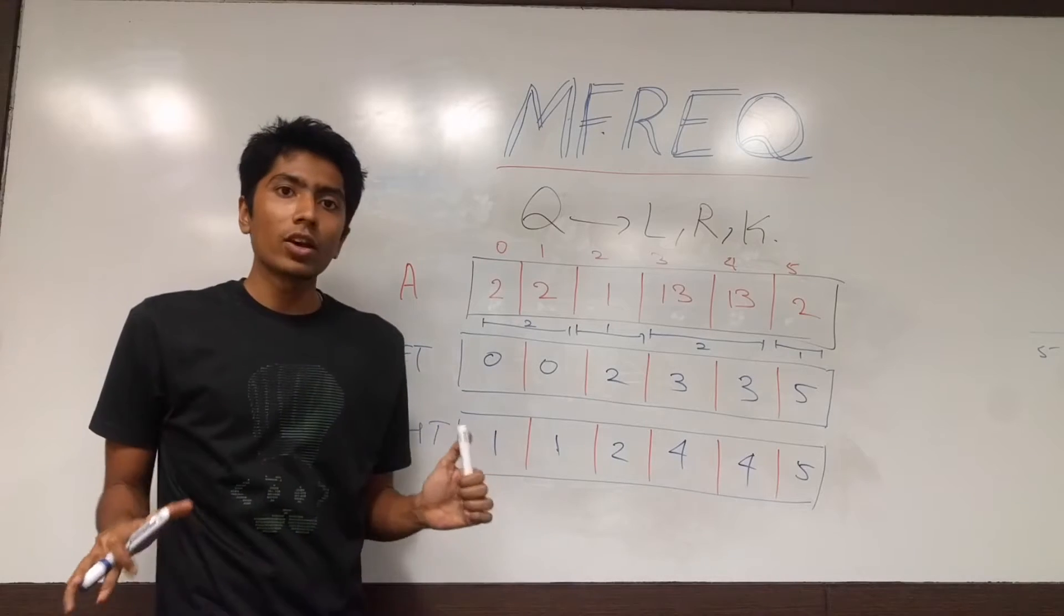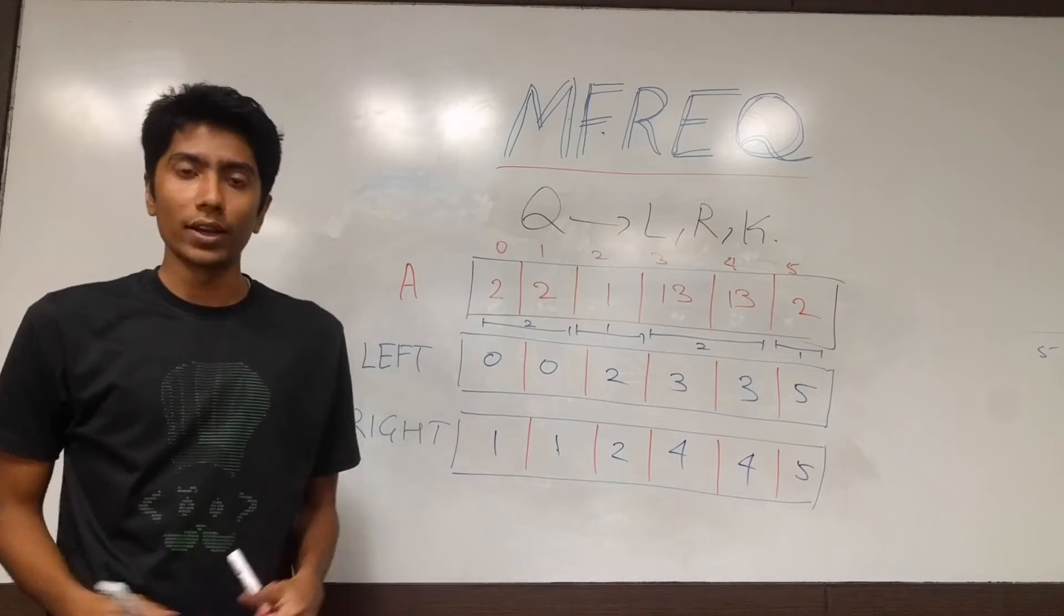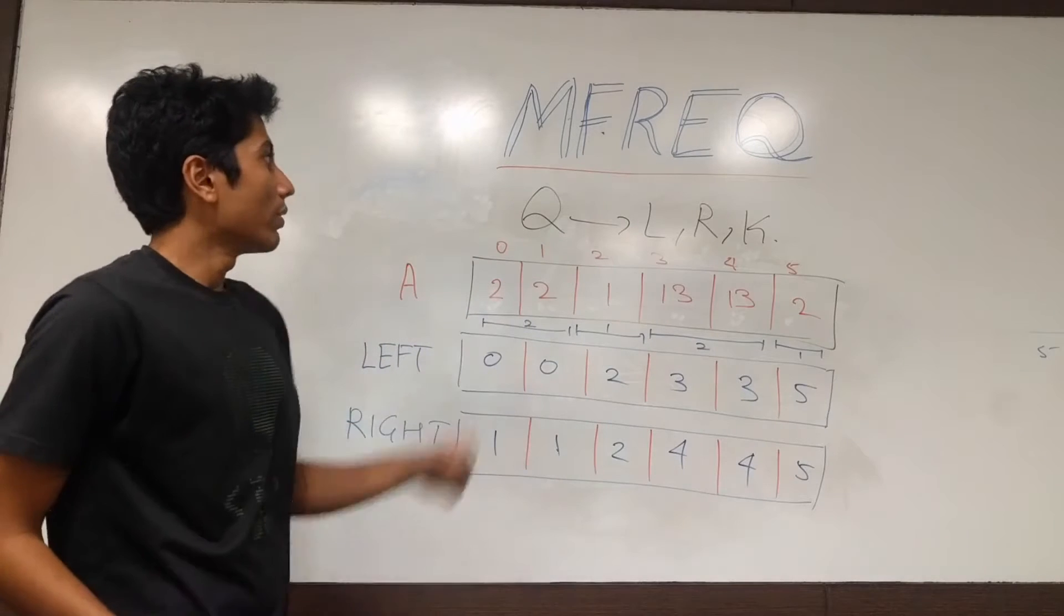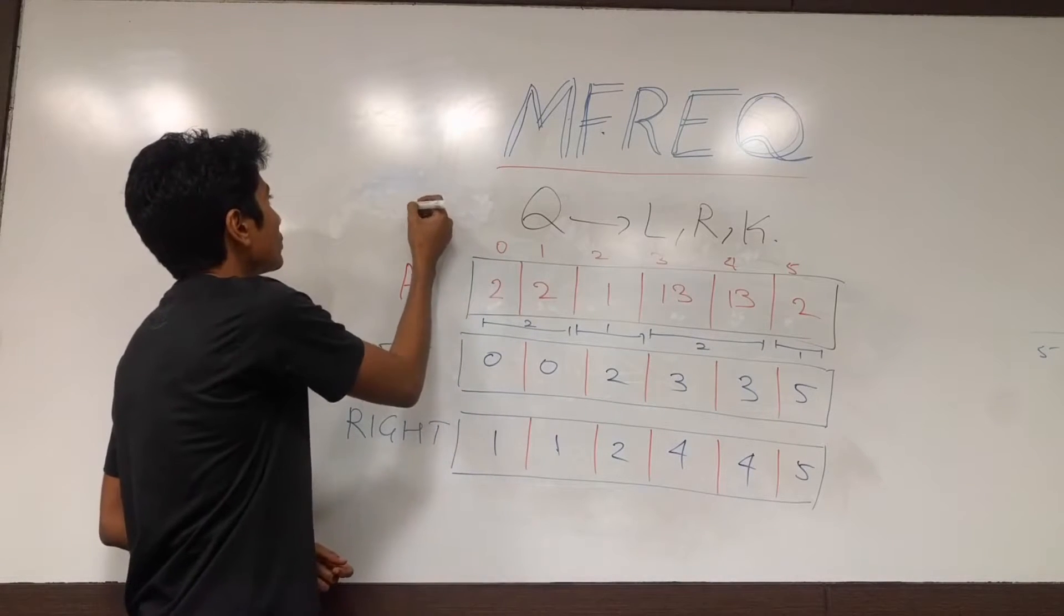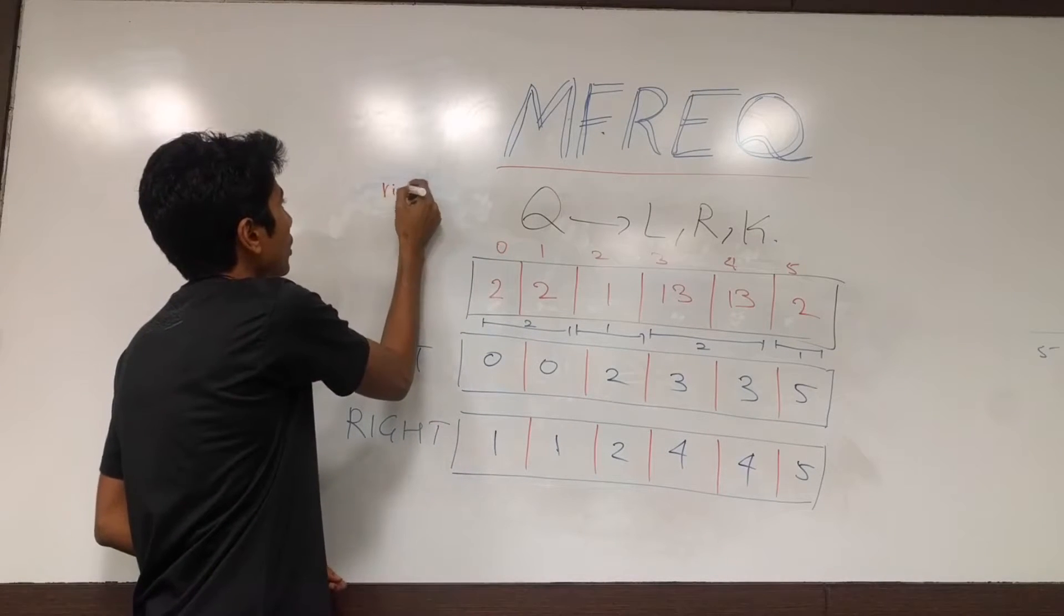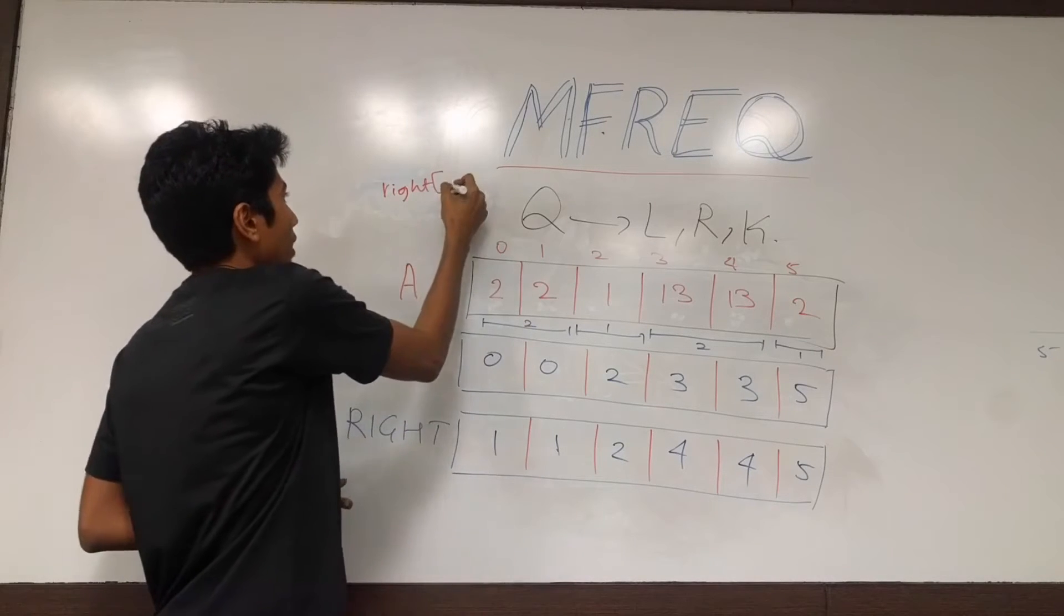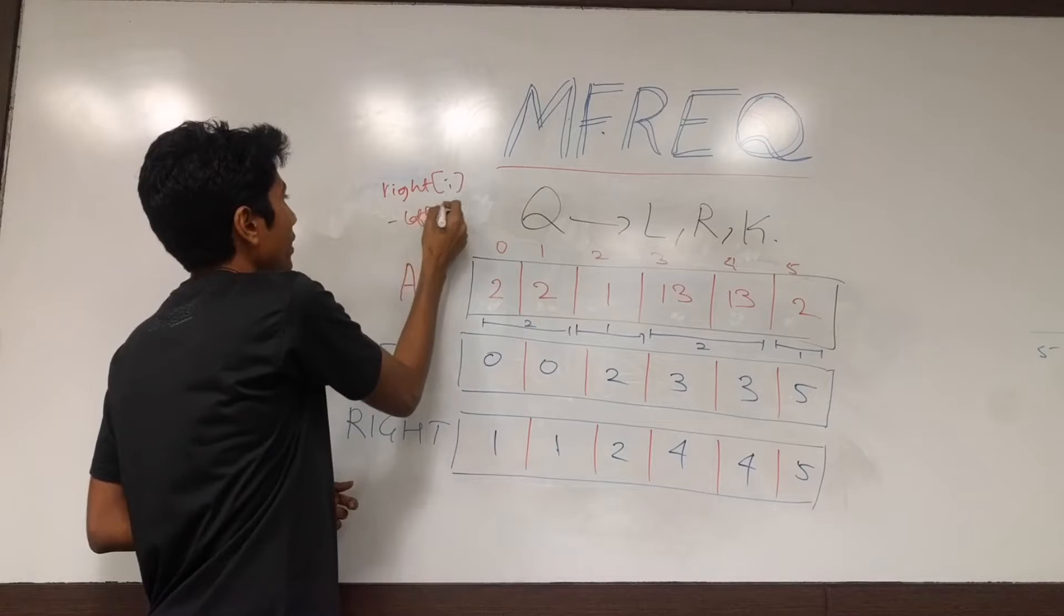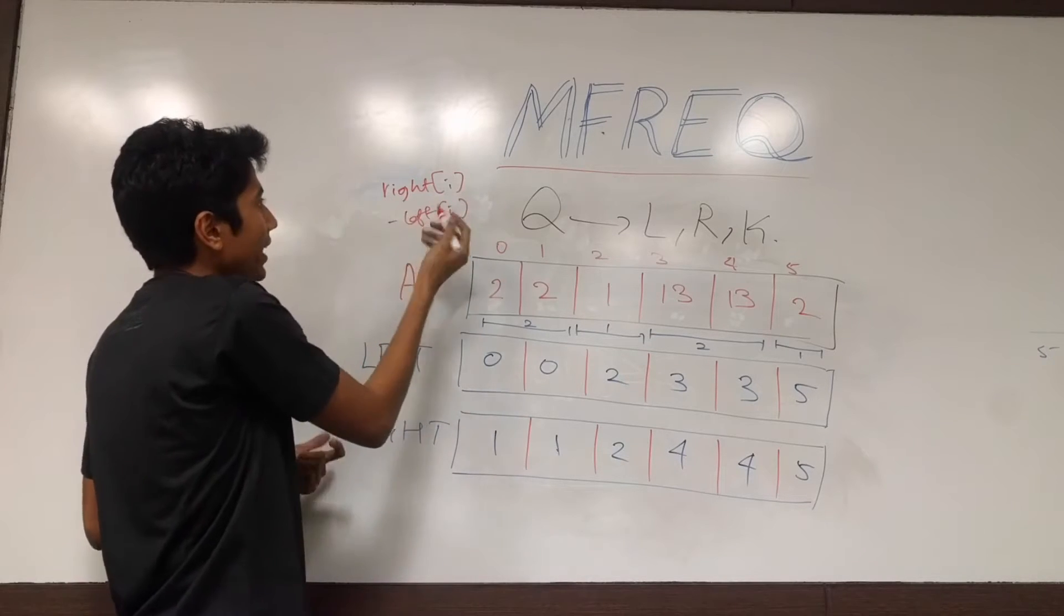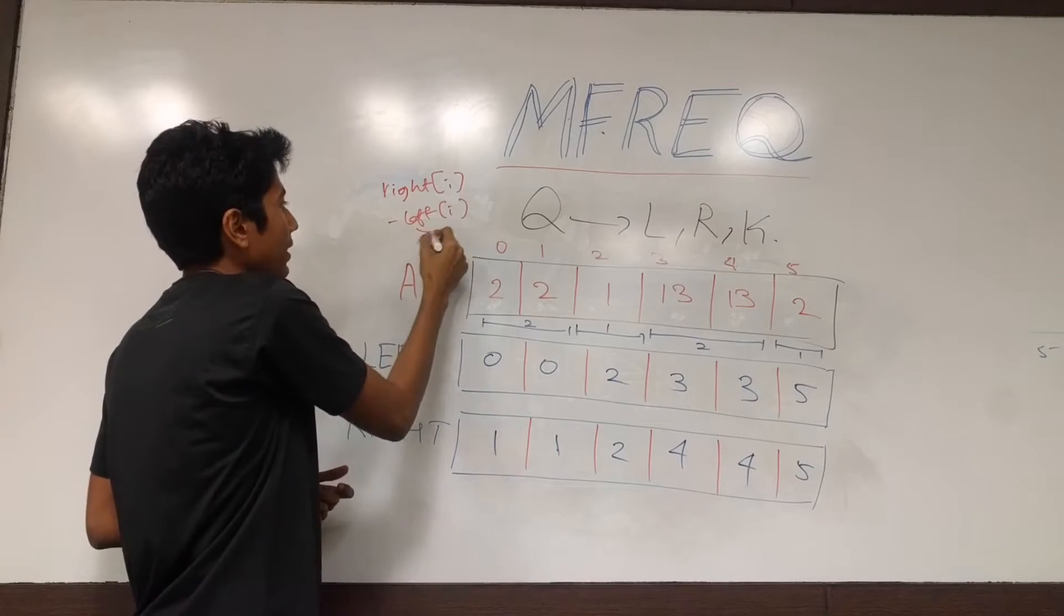Now any query of left and right can be answered in order 1. How? Well, we are going to be taking right of i, minus left of i, and checking if that is greater than or equal to k.